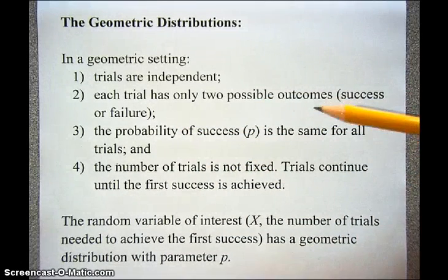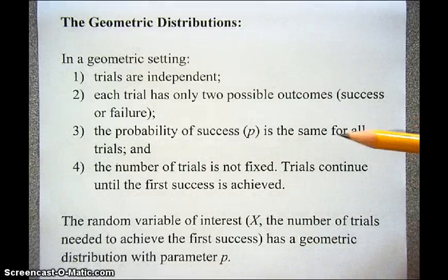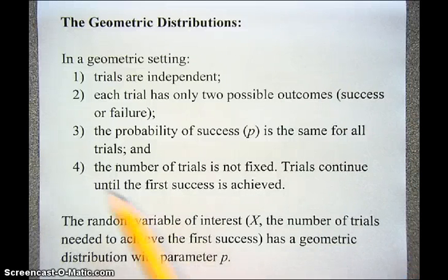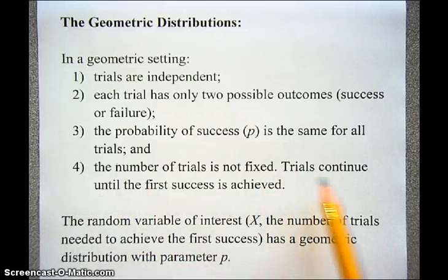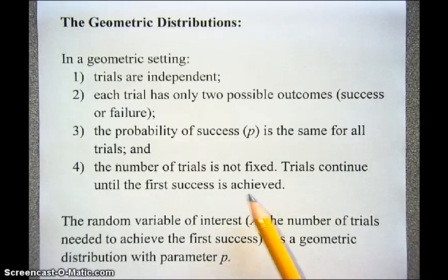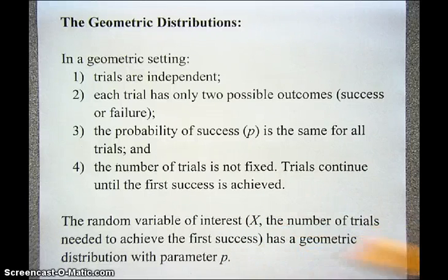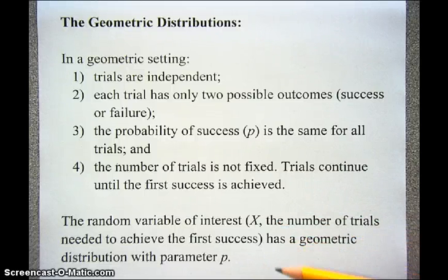Where geometric distributions differ from the binomial is this: we don't have a fixed number of trials. We keep trying until the first success is achieved. The random variable in this case is X, the number of trials needed to achieve the first success. That has a geometric distribution with parameter P.